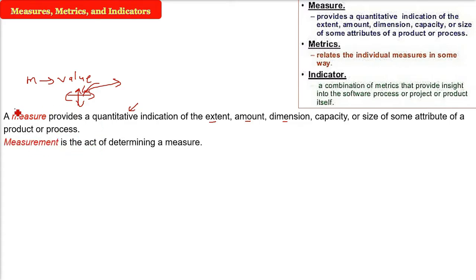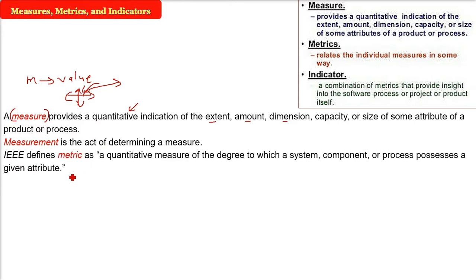Now the measurement is the act, is the work of determining a measure. What is metrics? Now IEEE gave a very good definition for metric. This metric is a quantitative measure of the degree to which the system or component or process possesses a certain attribute.